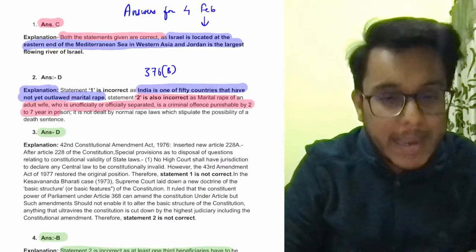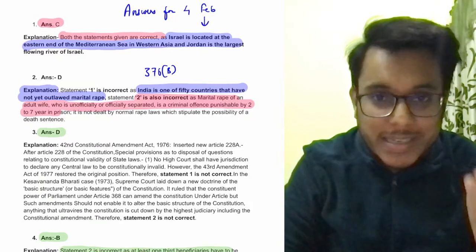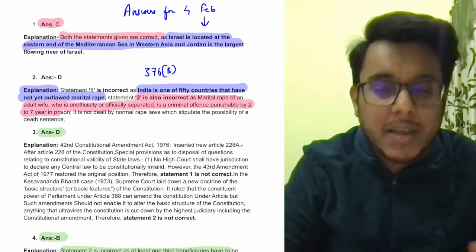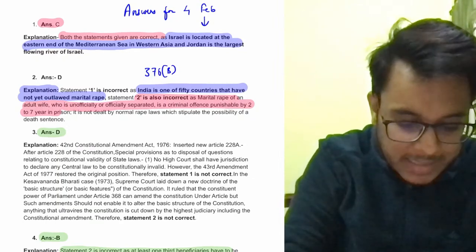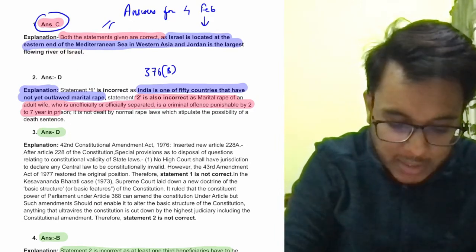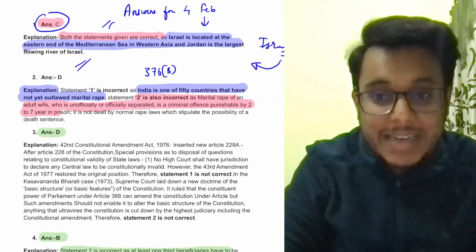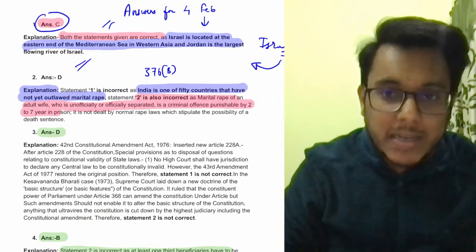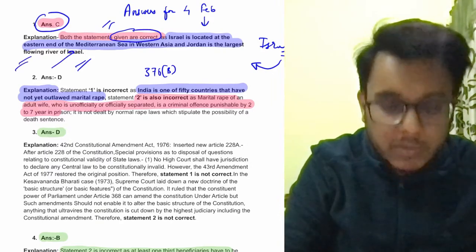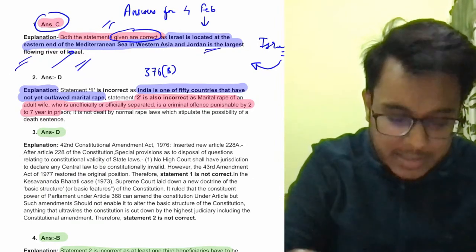Before taking articles, let's see the correct answers for yesterday's MCQs. Question 1 — correct answer is C: both statements are correct. This was about Israel's mapping, as India and Israel completed 30 years of diplomatic relations. Israel is located on the eastern end of the Mediterranean Sea, and the Jordan is the longest flowing river. Answer is C.